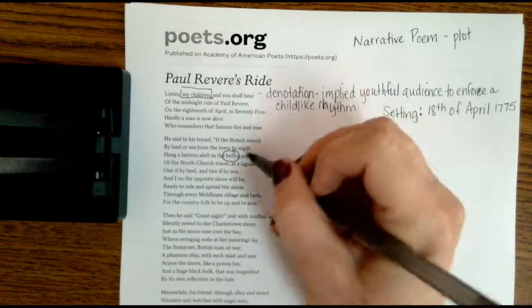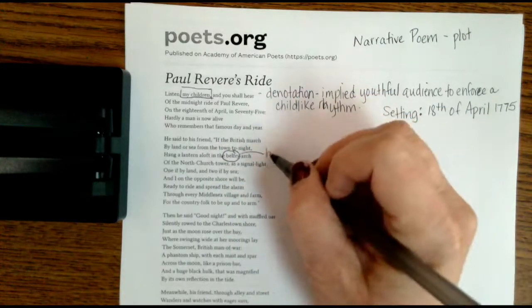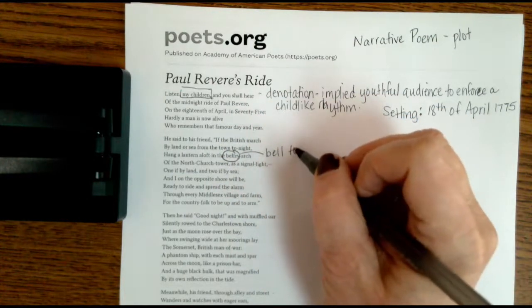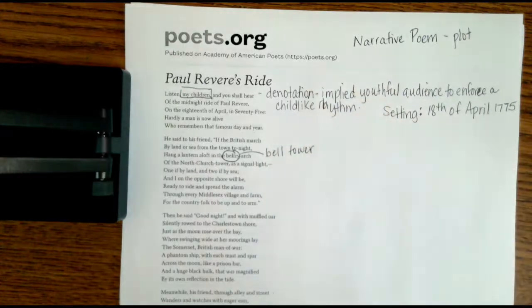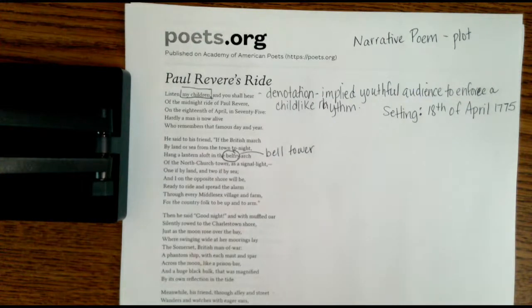So one thing I want to point out is let's circle the word belfry. Belfry is a bell tower. So in Boston, it's still there. It's the old north church. It's a white church. And if you have a second and a minute, push pause and you can look up what the old north church looks like. It still stands there today and it's got this beautiful bell tower above it.